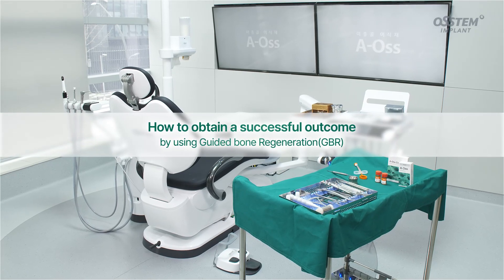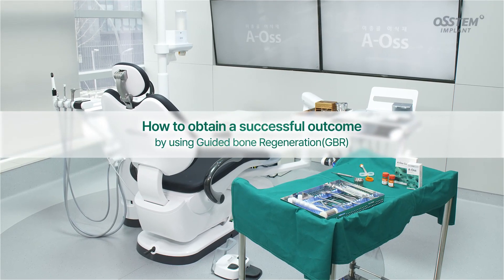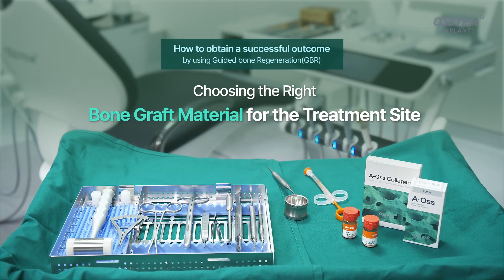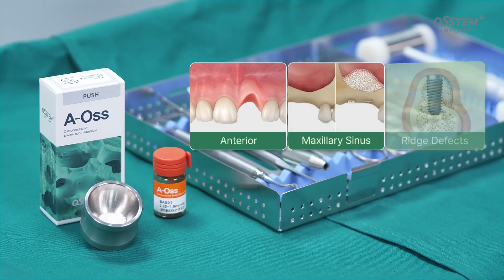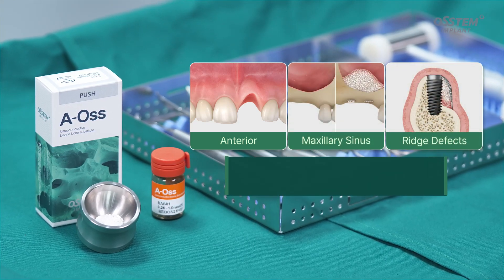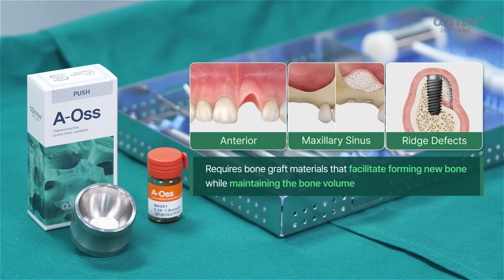Selecting the right bone material by comparing it to the patient's existing bone quality and conditions is crucial when expecting a satisfactory result from the guided bone regeneration. Defects may occur on surgical sites such as the anterior, maxillary sinus, and ridge, which will require bone graft materials that facilitate the process of forming new bone while maintaining the bone volume.